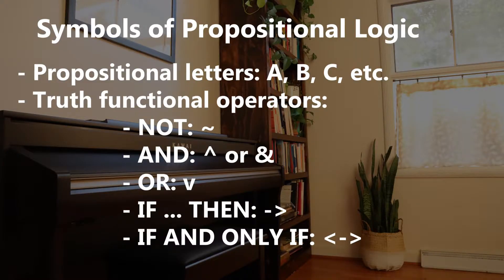The second type of symbol in propositional logic consists of the operators, sometimes called truth-functional operators. How these operators look varies from textbook to textbook, or notational system to notational system, but generally there are five that are used: one each for 'and,' 'or,' 'if-then,' 'if and only if,' and 'not.'